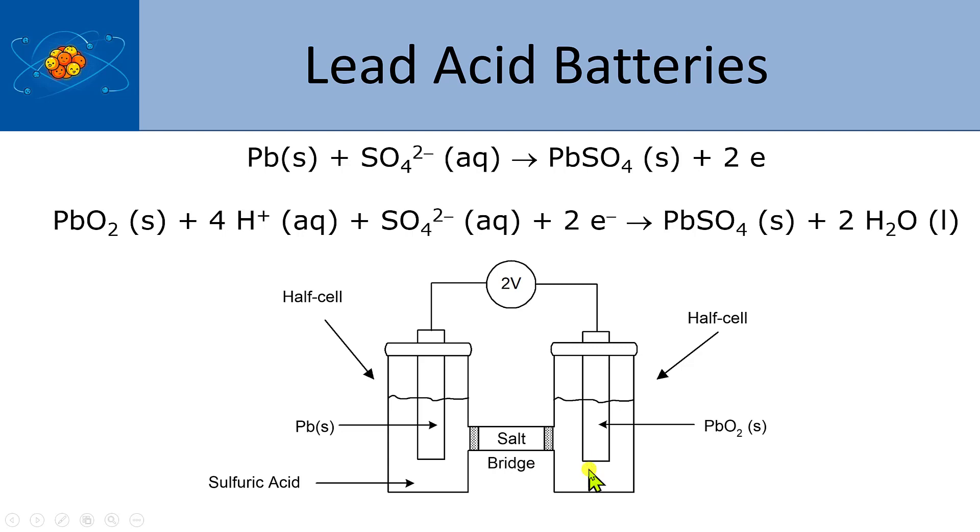When we were writing these cells out before, one of the things I mentioned is that the cathode is always more positive than the anode. And because of that, one of the things I didn't mention is electrons are flowing in this direction because the cathode has the more positive charge.